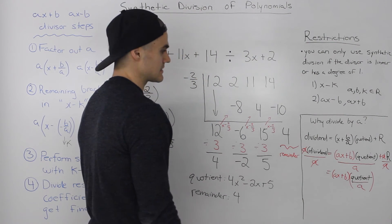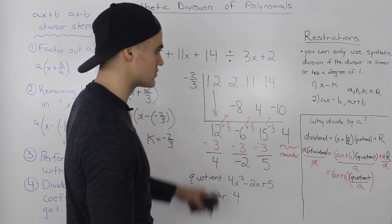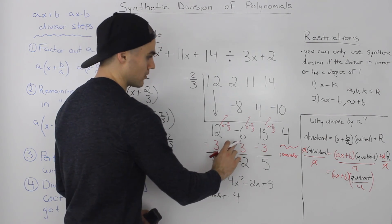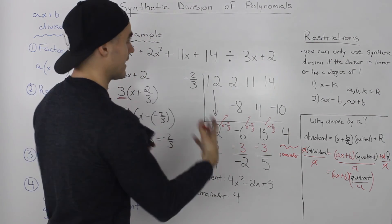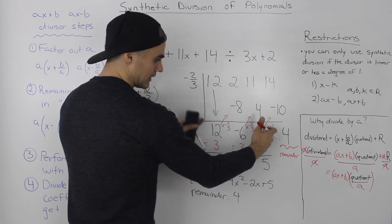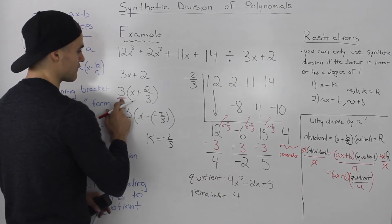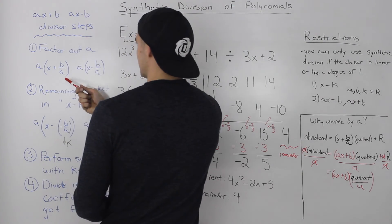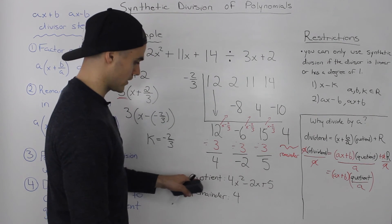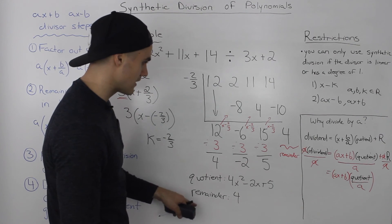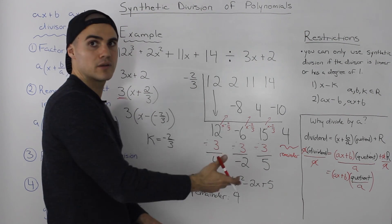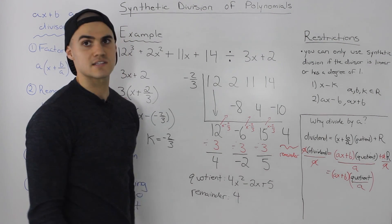It's a complex reason, and my suggestion is simply to remember: when you have a divisor of ax ± b, once you obtain the leading coefficients, divide them by whatever a value you factored out in step 1. After dividing, we got a quotient of 4x² − 2x + 5 and a remainder of 4. Comparing that with the long division result for the same example, it's the same answer.